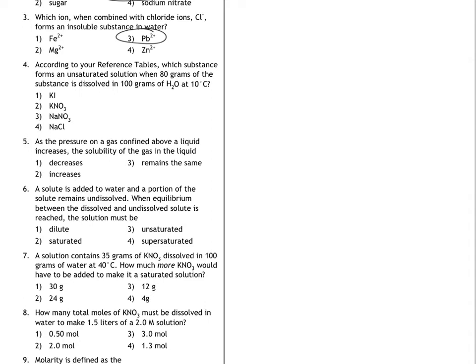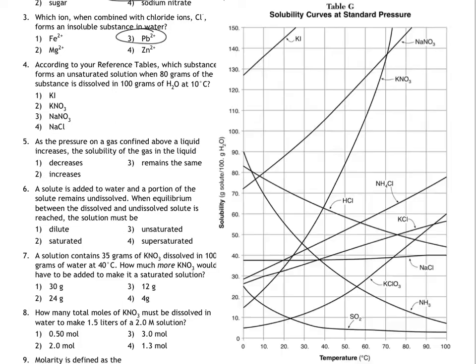Next up, according to your reference tables, which substance forms an unsaturated solution when 80 grams of the substance is dissolved in 100 grams of water at 10 degrees Celsius? So we're going to use table G for this question, and I'm going to go to the 10 degrees Celsius line right here, and I'm going to move up until I can hit the 80 grams mark. Now the question asks us to choose the substance that would be unsaturated at this point, and I think the obvious answer choice is KI, and the reason for that is because KI's saturation line is way up here, which is far above this coordinate, so that means it's unsaturated at that temperature.